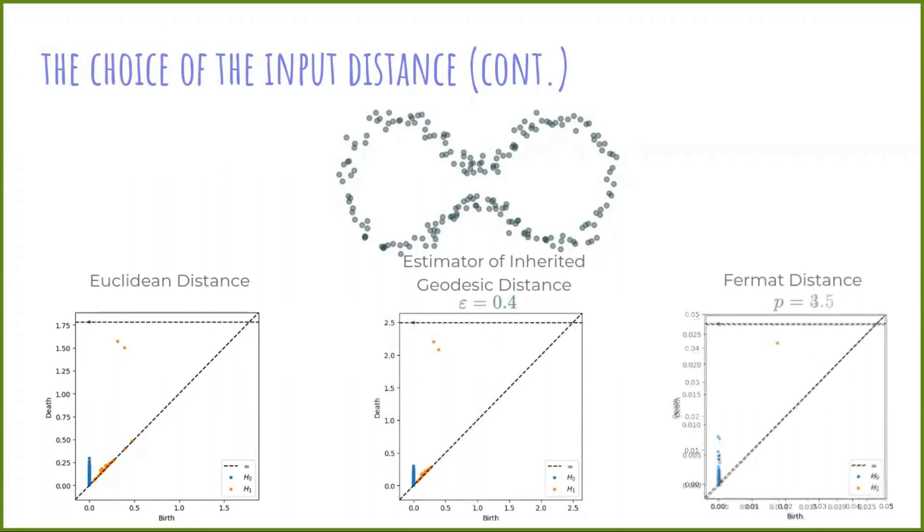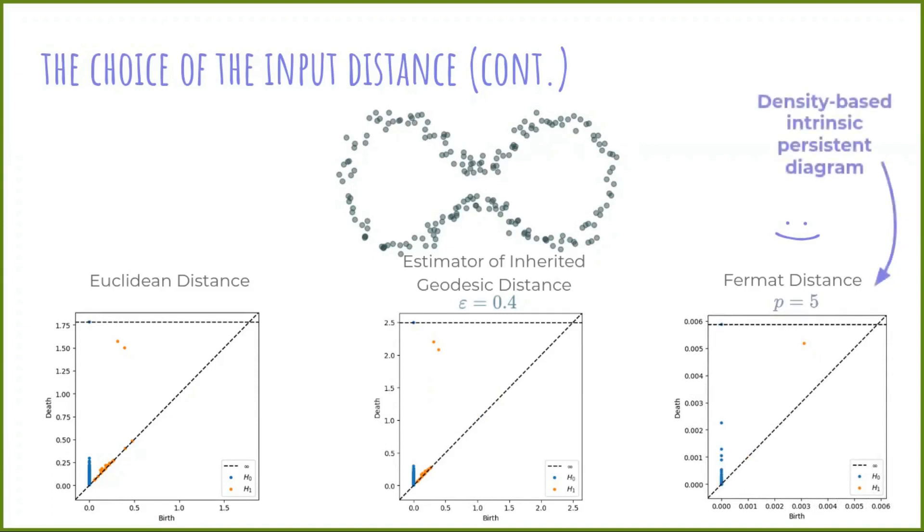We can see that with this choice, we successfully recover the topology of the space. This is another example of intrinsic persistence diagram, this time taking into account not only the intrinsic geometry, but also the density of the sample.